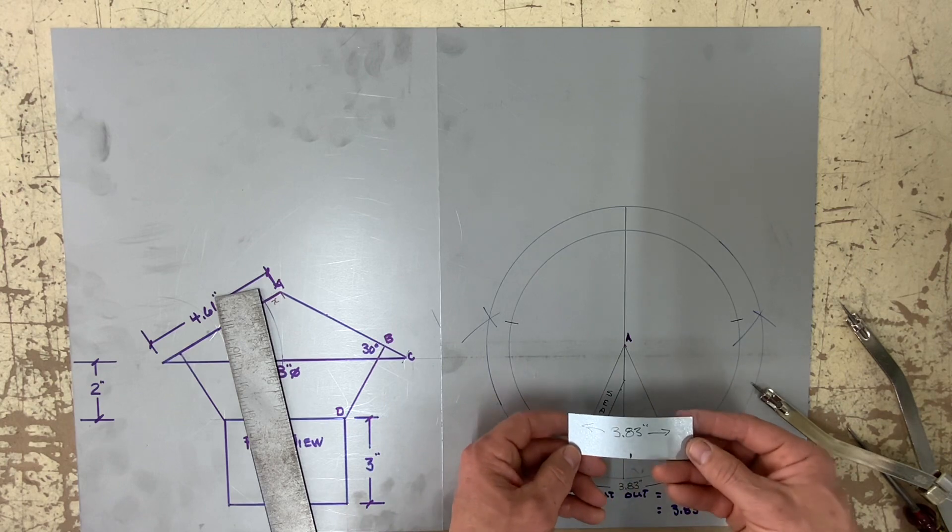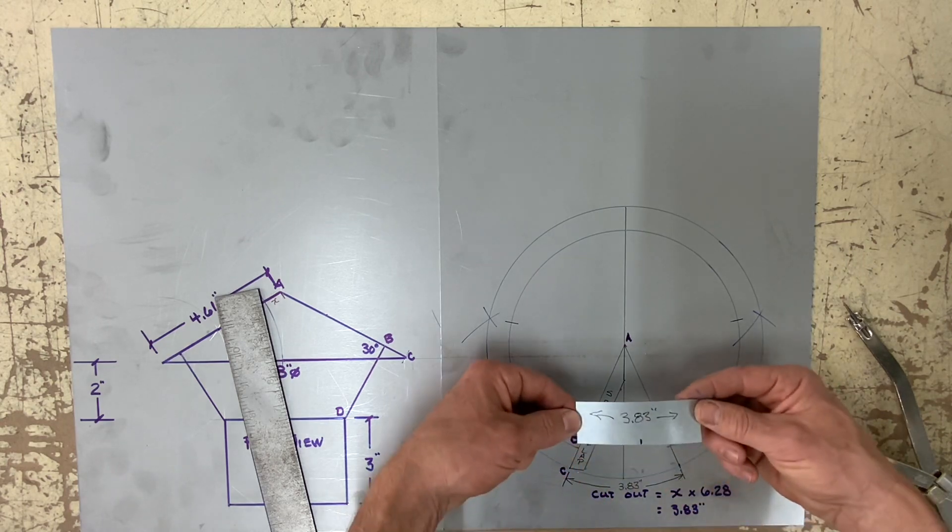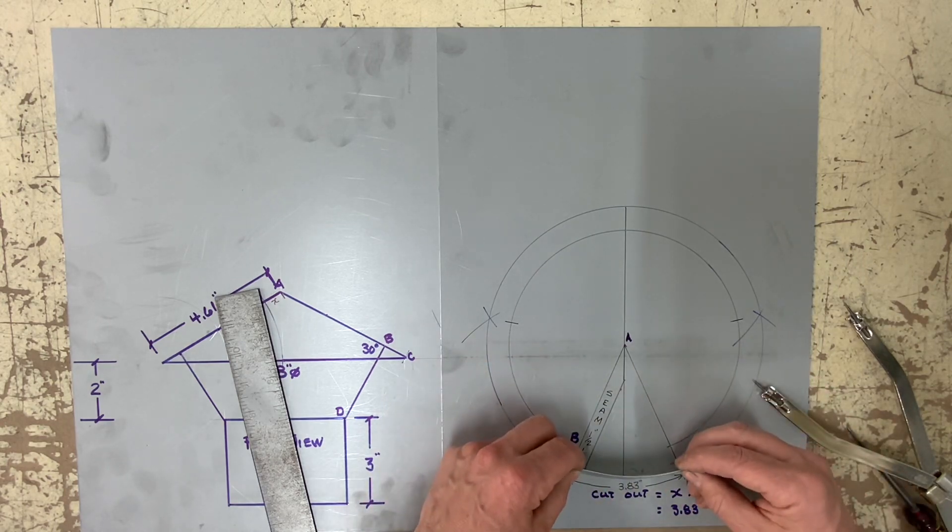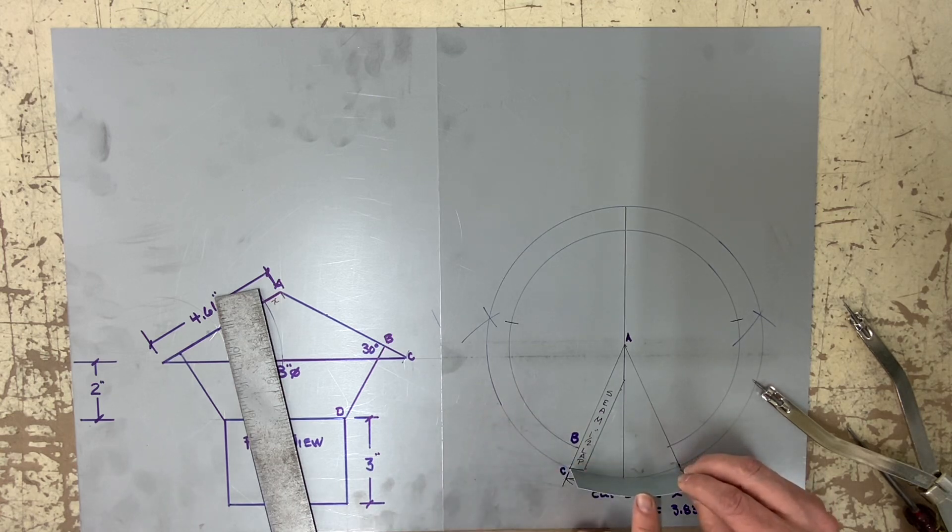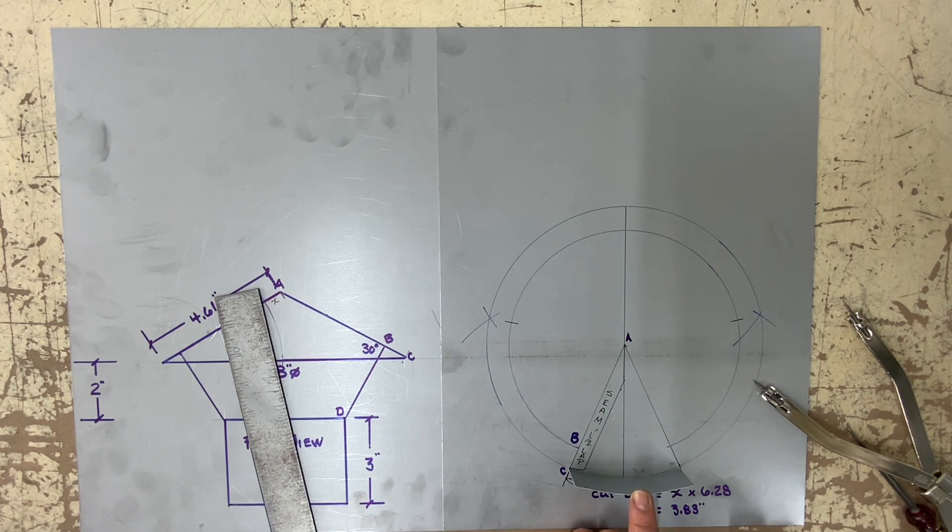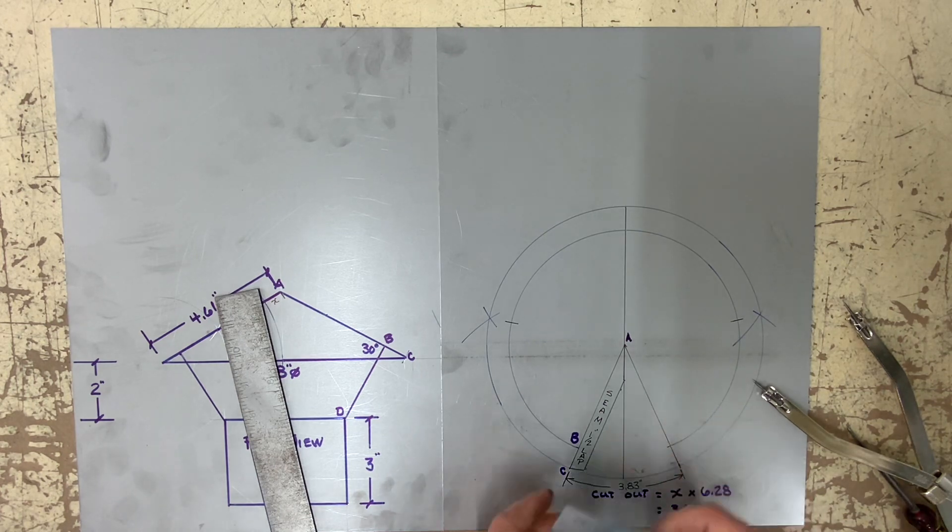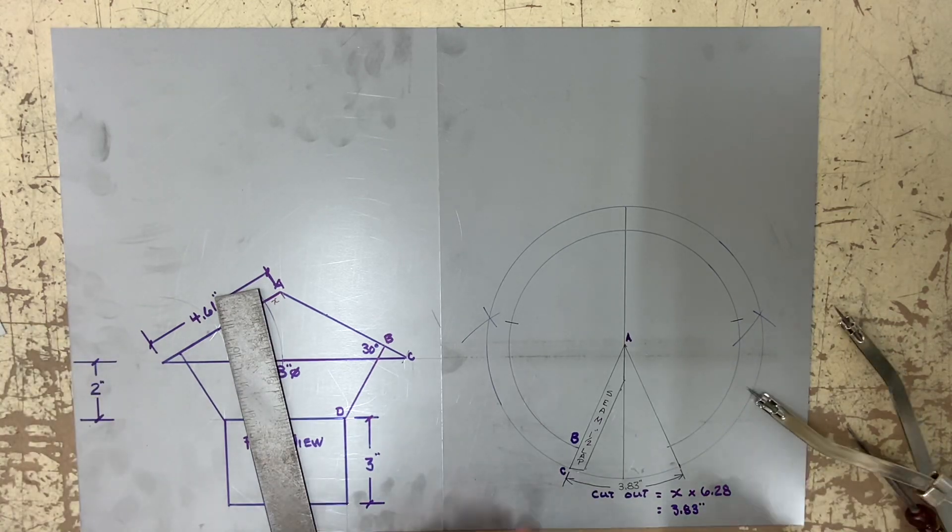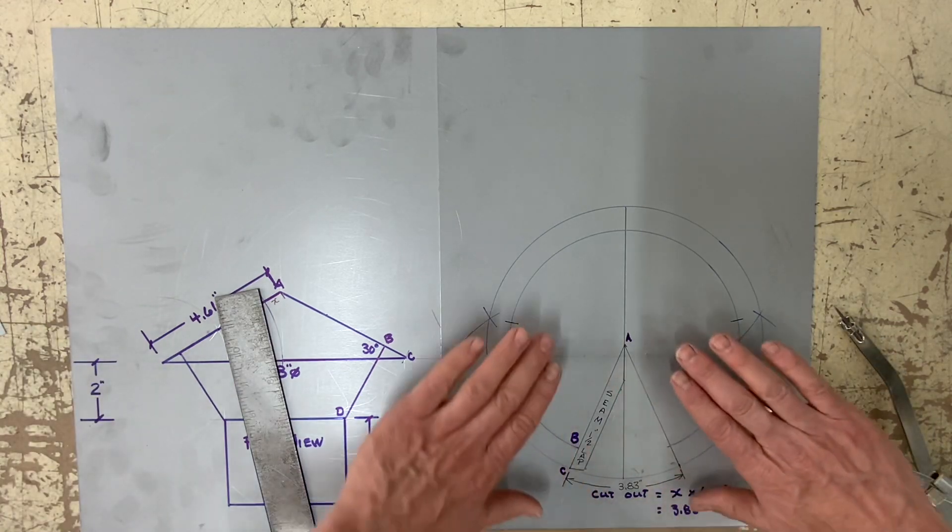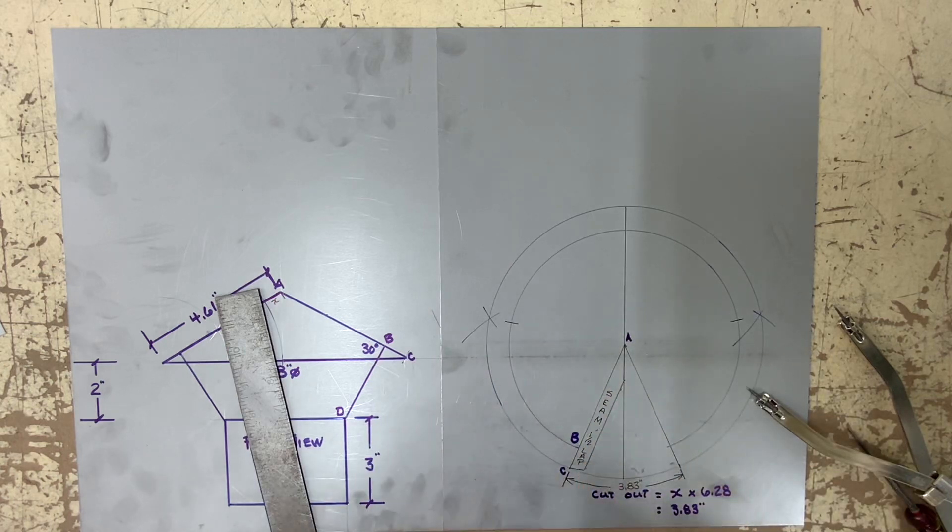So now that we've found three different ways to find our cutout of 3.83, I'm using a piece of metal 3.83 inches long and I'm adding the outside pattern where I will be removing this section to create the cone. I'm also leaving a seam, a half inch seam, so I can spot weld my cap.